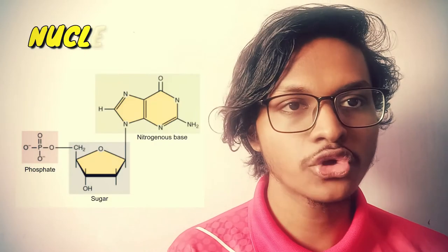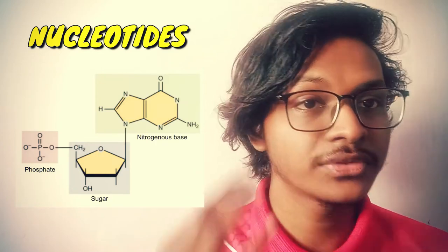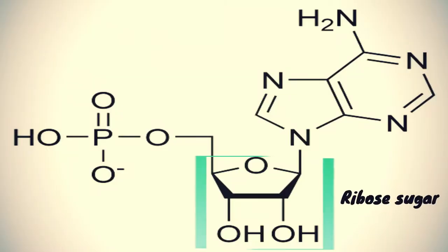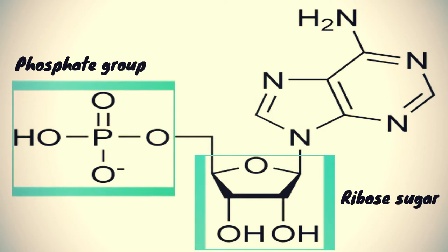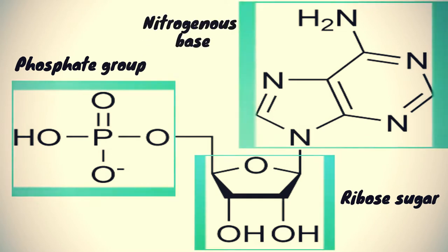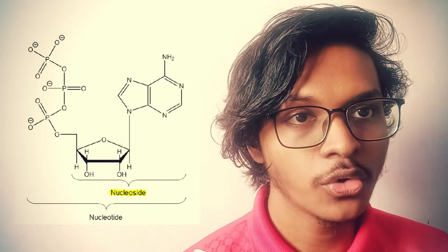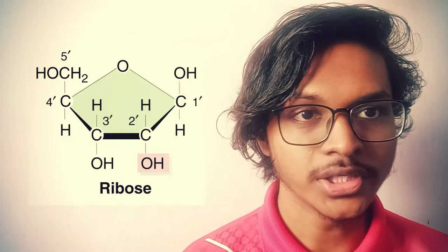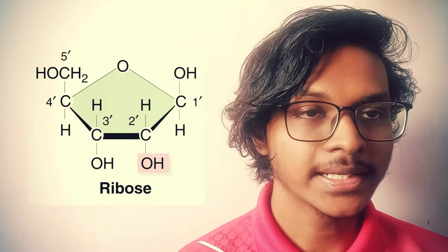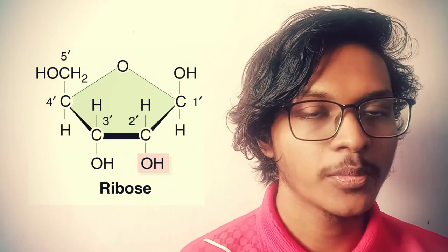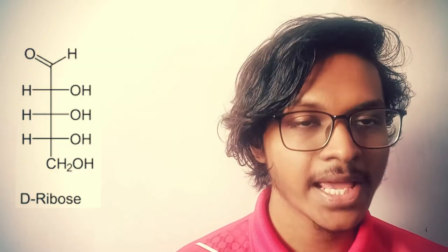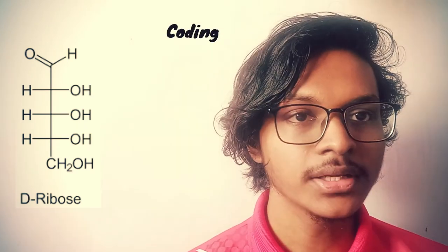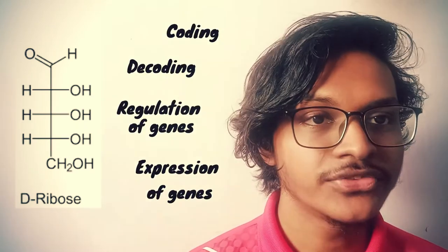Nucleic Acids are composed of nucleotides, which are the monomers made up of three components: a 5-carbon sugar, a phosphate group, and a nitrogenous base. Without the phosphate group, the molecule is known as a nucleoside. The 5-carbon sugar, also known as the ribose sugar, has the molecular formula C5H10O5. The naturally occurring form is D-ribose, which is used for coding, decoding, regulation, and expression of genes.